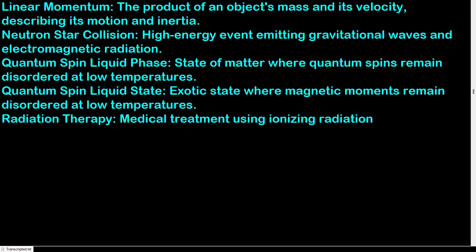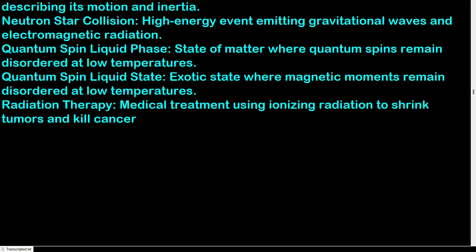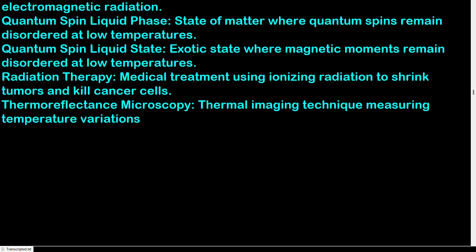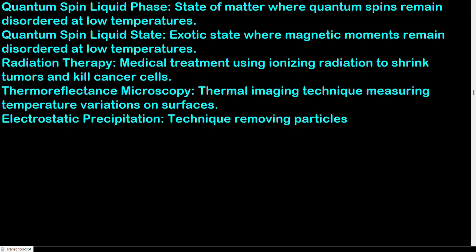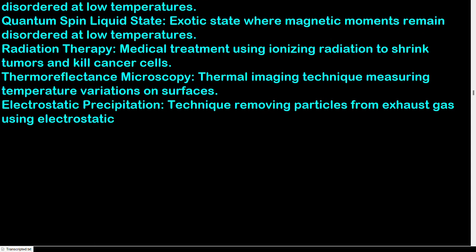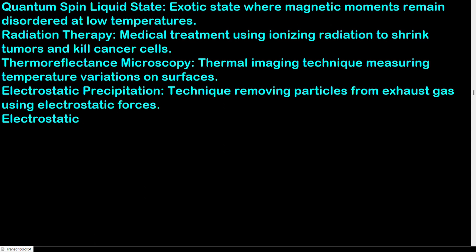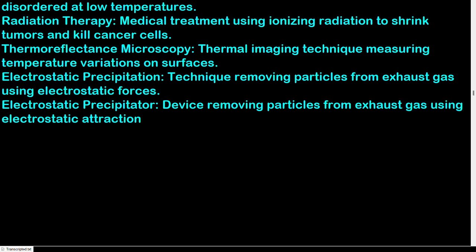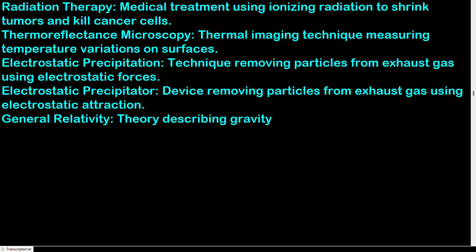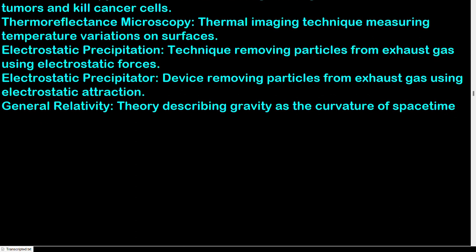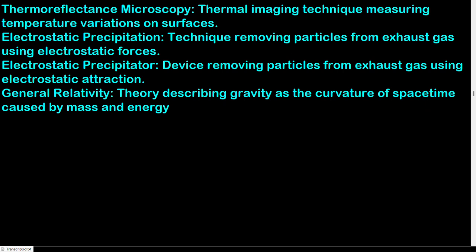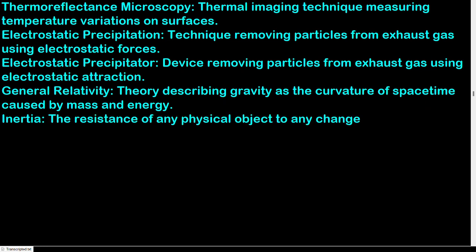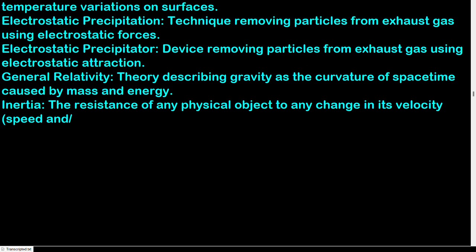Radiation therapy: medical treatment using ionizing radiation to shrink tumors and kill cancer cells. Thermoreflectance microscopy: thermal imaging technique measuring temperature variations on surfaces. Electrostatic precipitation: technique removing particles from exhaust gas using electrostatic forces. Electrostatic precipitator: device removing particles from exhaust gas using electrostatic attraction. General relativity: theory describing gravity as the curvature of space-time caused by mass and energy. Inertia: the resistance of any physical object to any change in its velocity, speed, or direction.